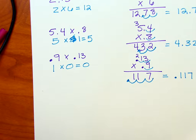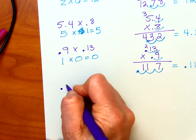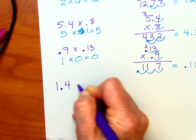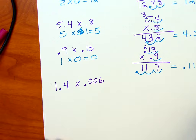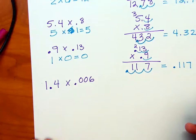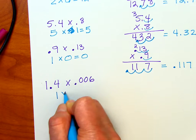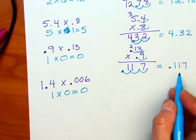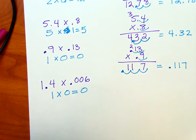Let's go ahead and do another one. Let's say we have 1.4 times 0.006. 1.4 times 0.006. Now as a quick estimate, I'm going to say this is going to be close to zero again, just kind of like how the last one was close to zero. That's a really small number. Let's go ahead and see what we get.